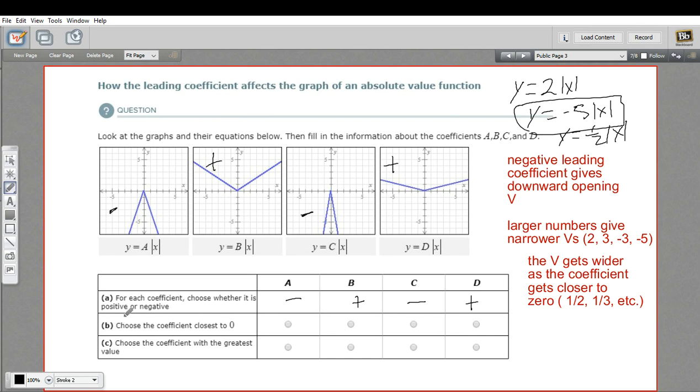Next, it says choose the coefficient closest to 0. As I said, the closer the coefficient gets to 0, the wider, the more spread out that V is. This is definitely our widest, most spread out V, so I'm going to choose D for that one.